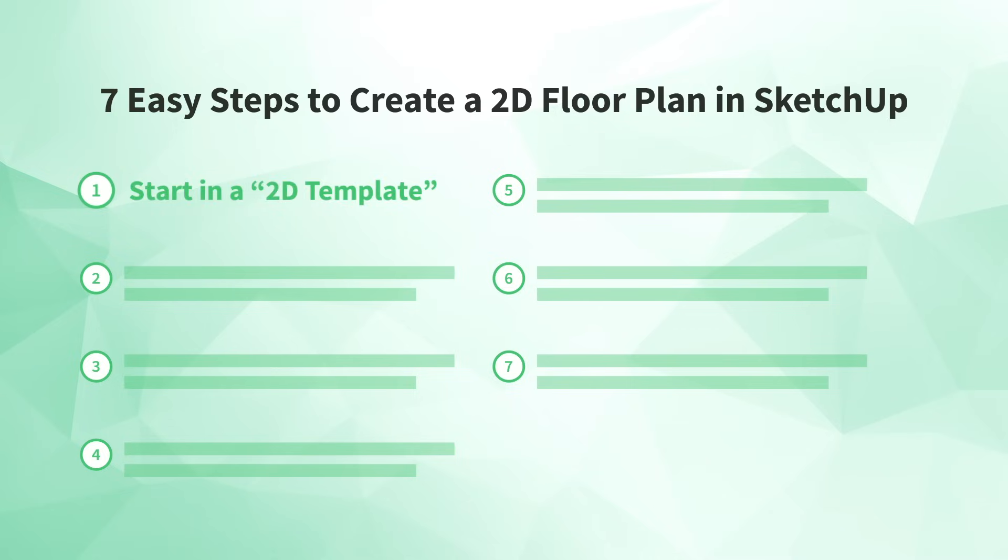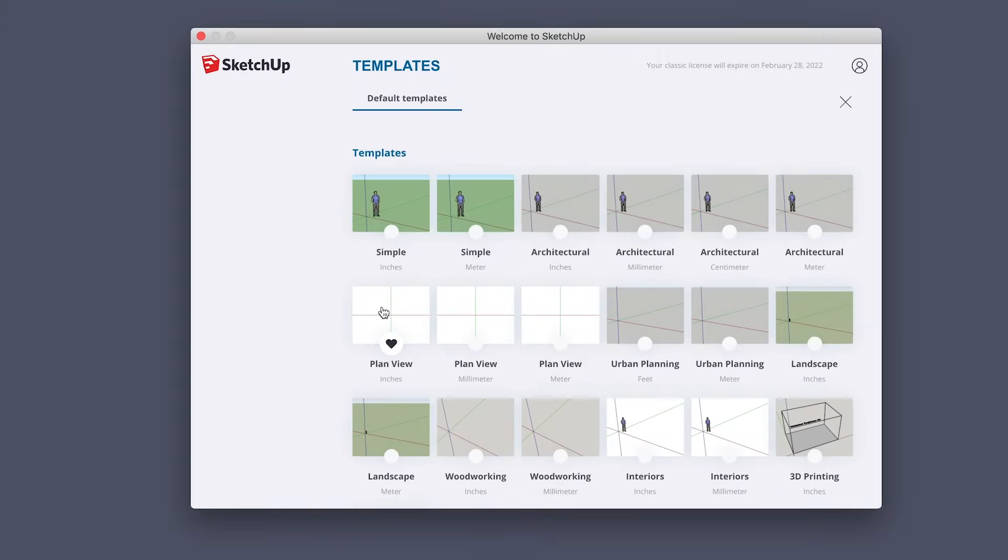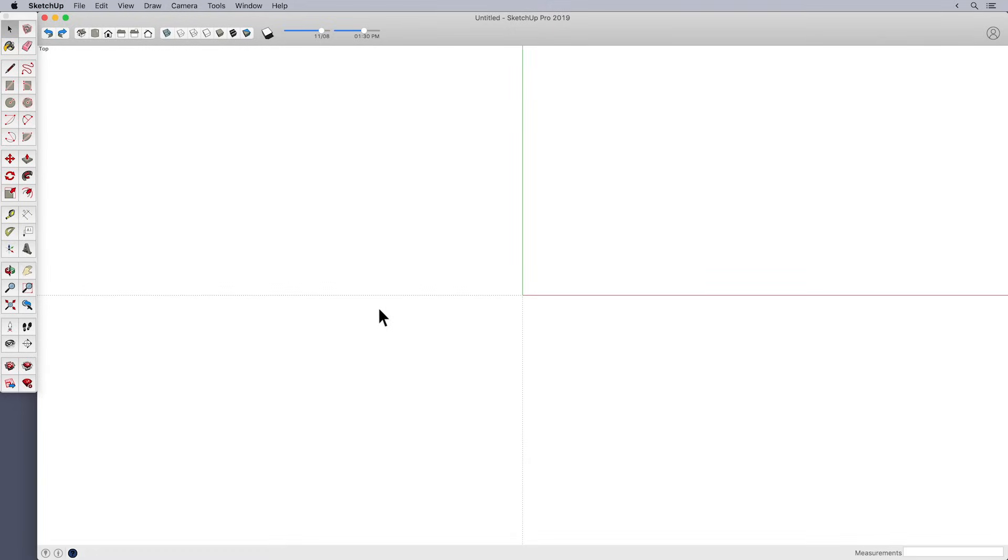Okay, ready to jump into the steps? Let's start with step number one, start in a 2D template. As you remember from our Watch This Before You Get Started with SketchUp video, for all projects you work on in SketchUp, I recommend that you use a template that starts you with a plan view, or a top-down view. This is even more important when you set out to create a floor plan.